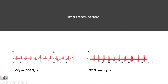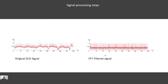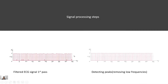This is the original ECG signal. After using Fast Fourier Transformation, the ECG looks like this. After the first pass of the windowed filter, this is what the ECG signal looks like. We would then try to remove these small frequencies from the ECG signal to get the R-peaks.